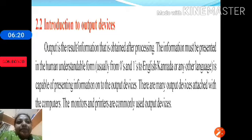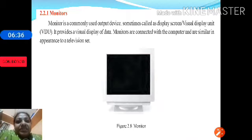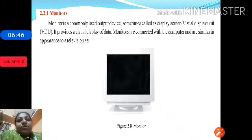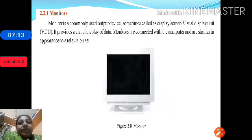Let us start with the most commonly used output device — the monitor. Monitor is very similar to our television screen and is also called a Visual Display Unit, or VDU. Monitor is one of the most popular and commonly used output devices, which has a display screen. It is generally known as VDU — Visual Display Unit — and it provides a display where we can see the data. Monitors are generally connected to a computer.